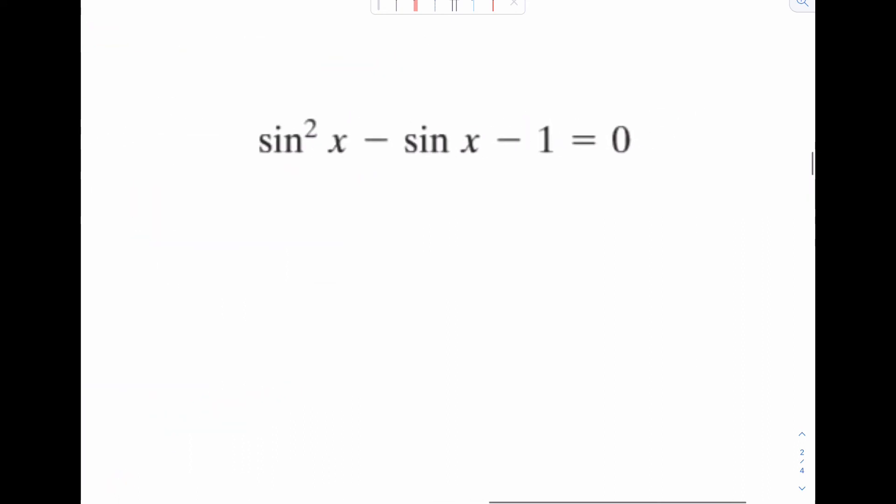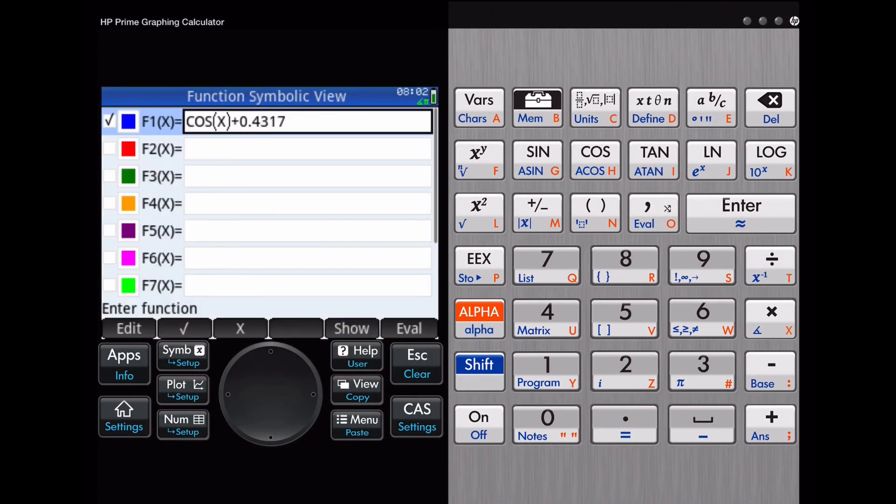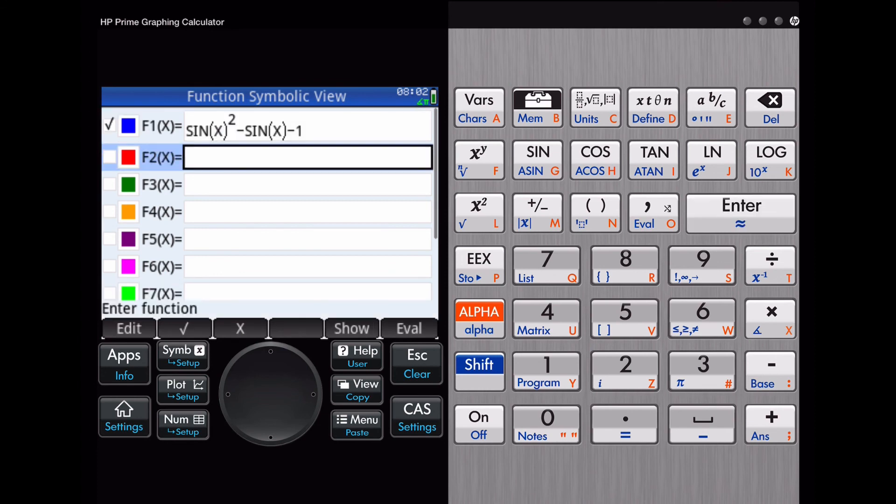Let's go to our next one. You notice a squared here. So this is how we write it in class. But for the calculator, you have to write it like this. Even though it looks kind of awkward, this is how the calculator understands sine squared. So let's go back to our calculator now. Apps function, delete. So sine x, squared, minus sine x, minus 1. And graph it.